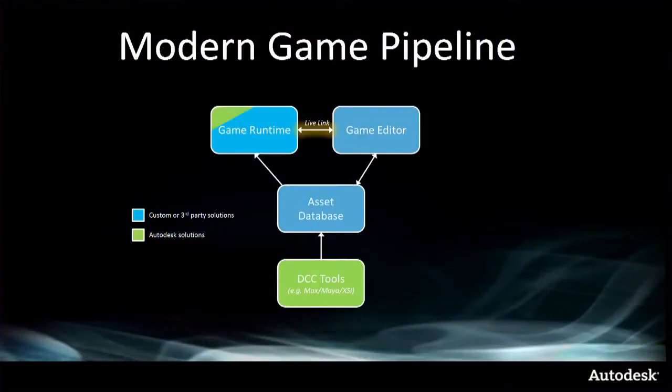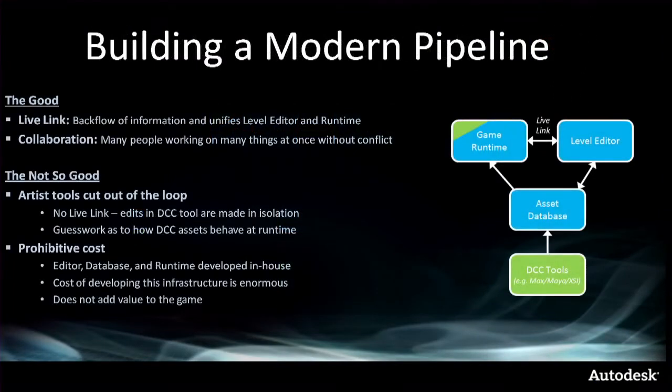When the level editor says move tree 0x58b and the game runtime knows exactly what that means and moves that tree while the game is running, you get some pretty cool iteration time. We call this the wormhole of iteration — where iteration time becomes zero. There's no export, there's no file. It's what we call live link. This is the ideal.